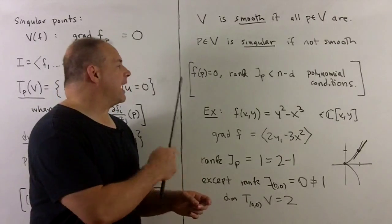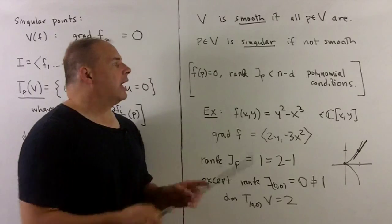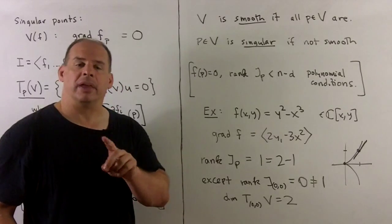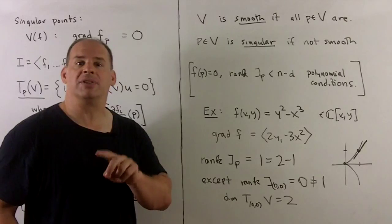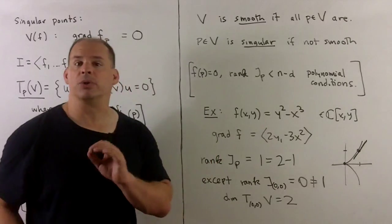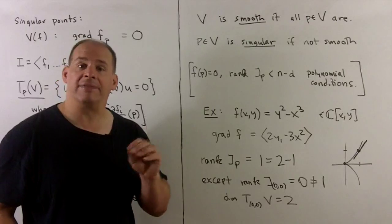We have the defining condition for V itself, and the singular condition is going to be vanishing of determinants of minors in our Jacobian. Those will be polynomials, so it's an affine variety.